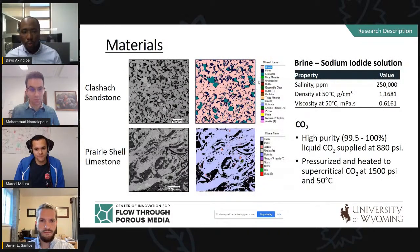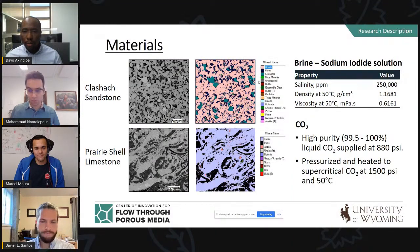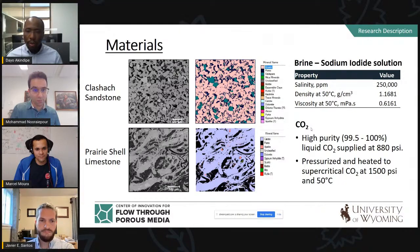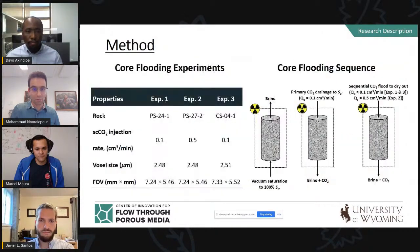Experiments used two main materials: the Clashach sandstone sample — mainly quartz with some feldspar and clay minerals, one of the cleaner sandstones — and a Prada shell limestone, mostly calcite with some intragranular and intergranular micropores. The brine was a sodium iodide solution at about 250,000 ppm salinity, and CO2 was applied as a liquid then heated and pressurized to supercritical state. Three core flooding experiments were done — two carbonates at different rates and one sandstone — with imaging at about 2-micron resolution.